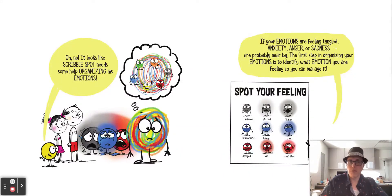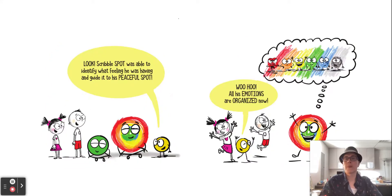And if you have listened to any of the books on the zones of regulation, or if you've looked at our tools to try in the student center, you'll know some of the different ways to deal with some of the different zones and the different feelings. Look, scribble spot was able to identify what it was feeling and guide it to its peaceful spot. It's now much more peaceful and calm. Woohoo! All of his emotions are organized now.